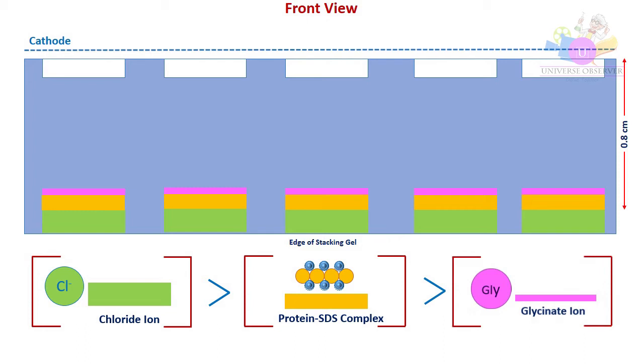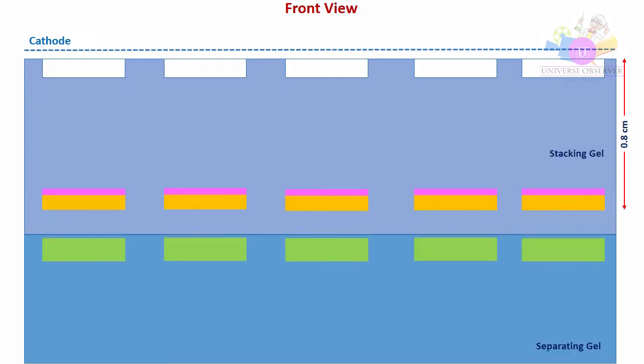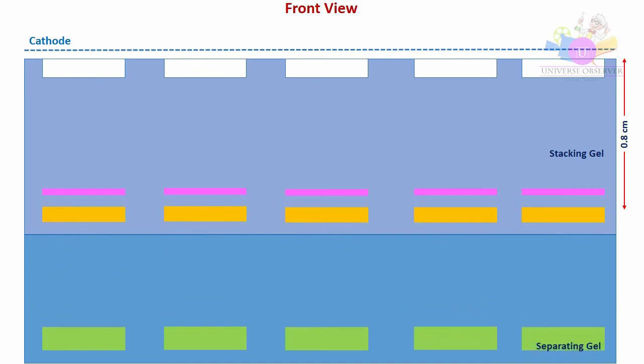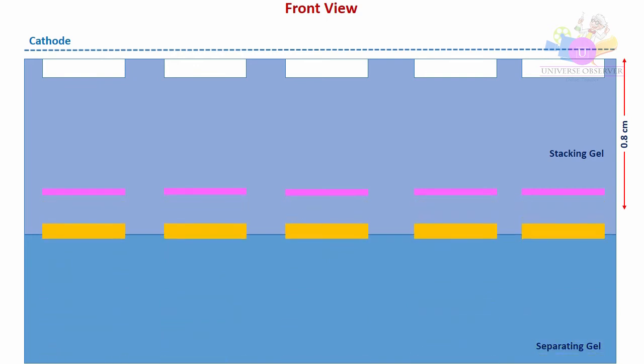Then these ions enter separating gel. Now pH is different, higher pH than stacking gel. Due to this pH, glycinate becomes more fully ionized and its mobility increases. So protein SDS complex will leave from the glycinate and chlorine boundaries. Now these three individuals are moving to anode by their own rates. Now is time to separation of proteins based on their size.